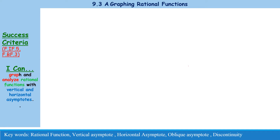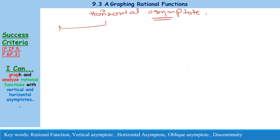Any y value that makes the function undefined is said to be a horizontal asymptote. In order to understand this concept, we have to understand about three cases.